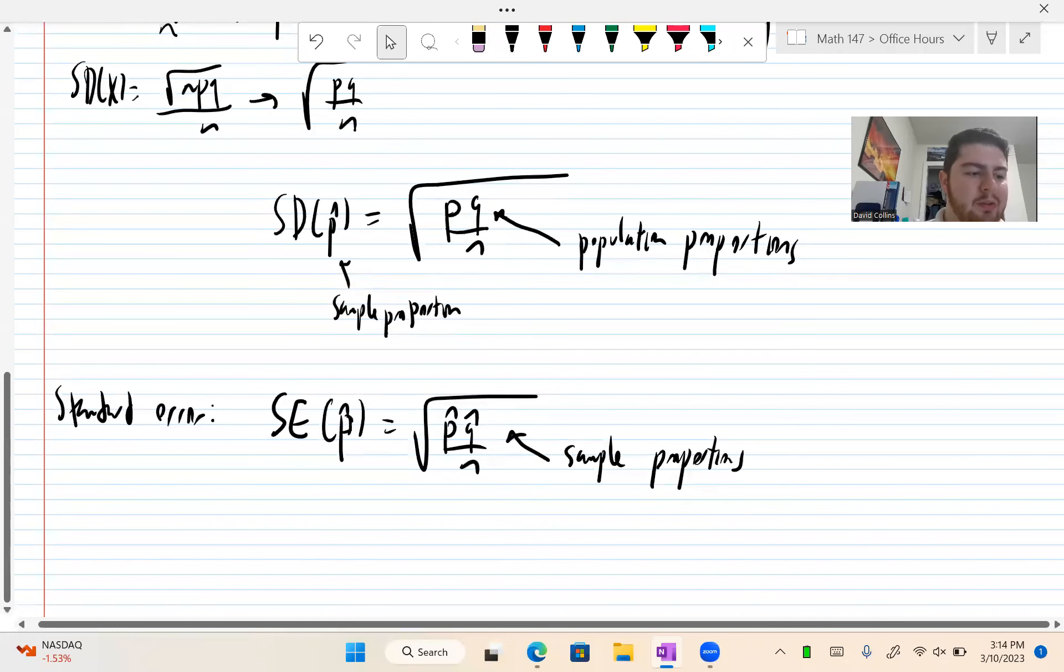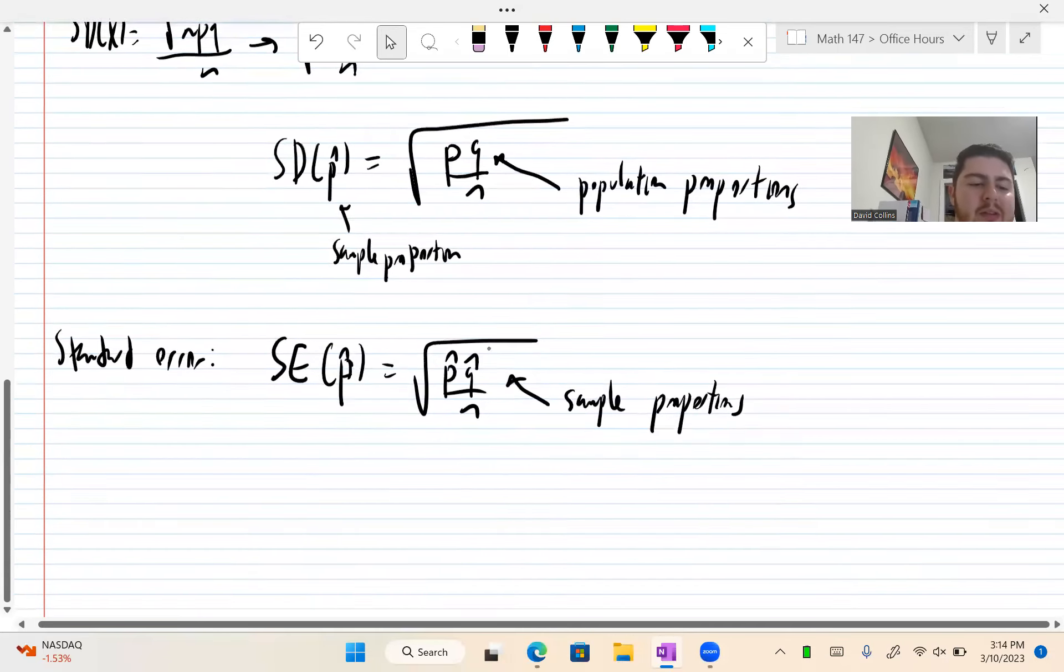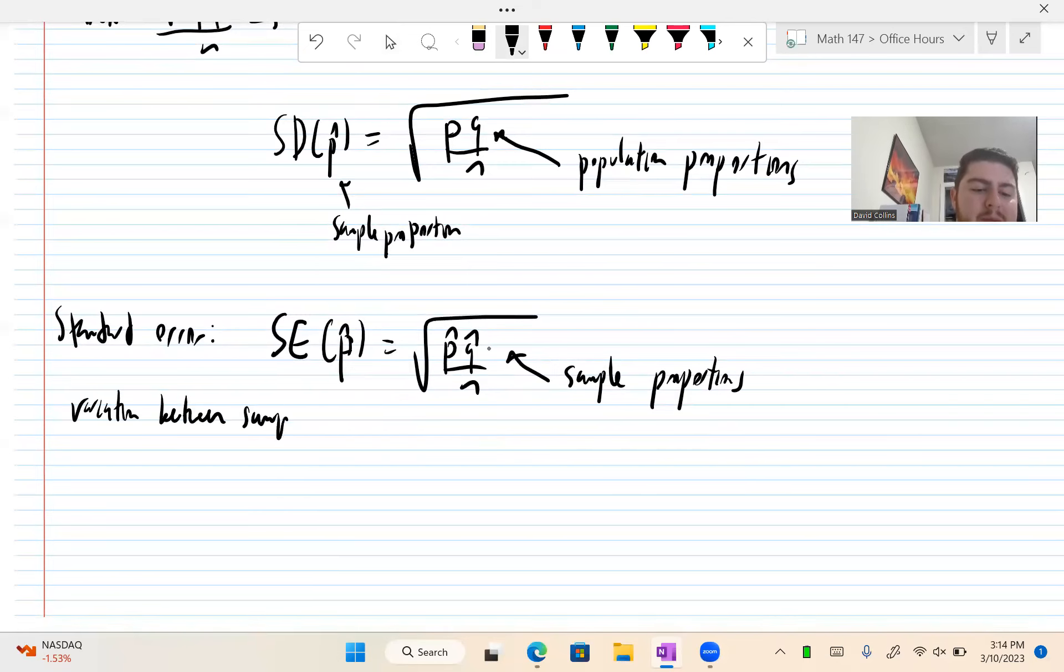Which is SE of P hat is square root of P hat Q hat over N. Here we have our sample proportions. This is a number that we can achieve just by doing an experiment or a survey, depending on the context. This also tells us how much variation there is between samples, since each sample will be different for one reason or another.